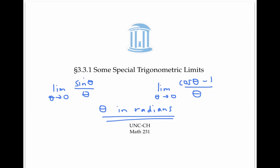In this video, we found that the limit as theta goes to zero of sine theta over theta is equal to one, and the limit as theta goes to zero of cosine theta minus one over theta is equal to zero. There's a nice proof of these facts in a later video for this section.